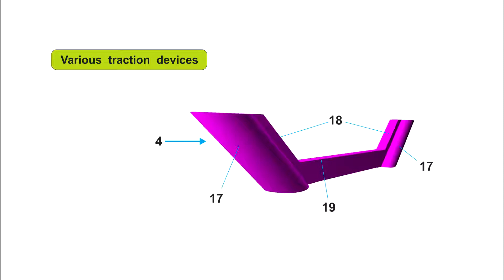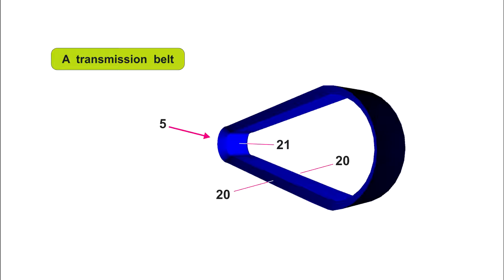A transmission belt, reference 5. Being noteworthy are the sides, reference 20, which are sliding and determine the turning radius, and the internal face, reference 21, which is where the traction is exerted.